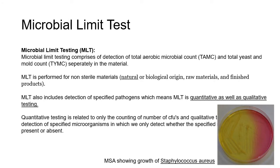Now the microbial limit test — the name itself suggests we test the number of microbes present whether they are within limit or over limit. Microbial limit testing comprises detection of total aerobic microbial count and total yeast and mold count. So there are two things we enumerate separately in the material: total aerobic microbial count and total yeast and mold count.